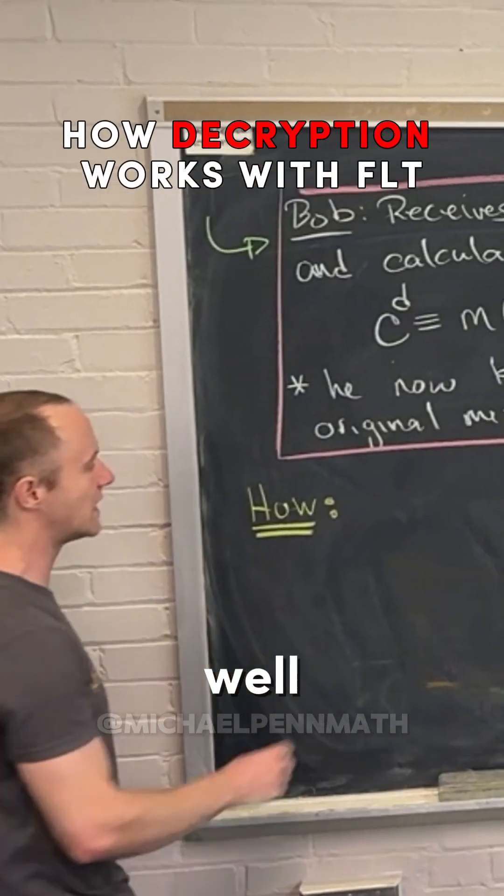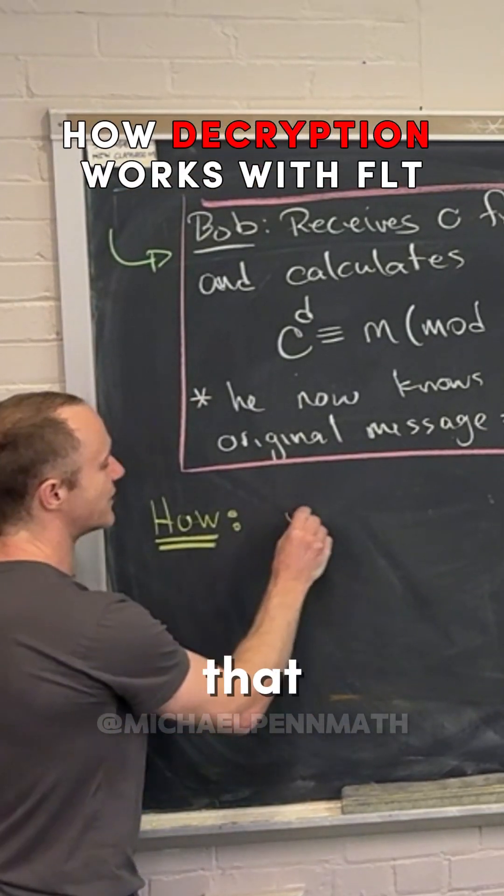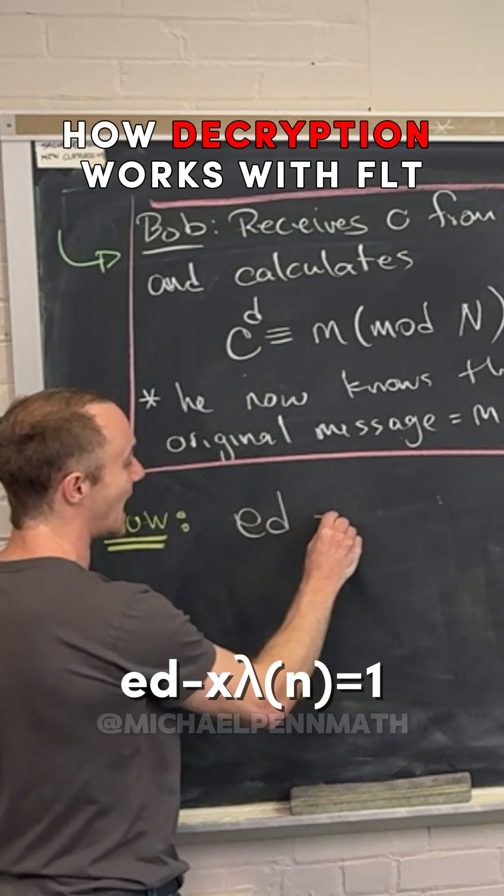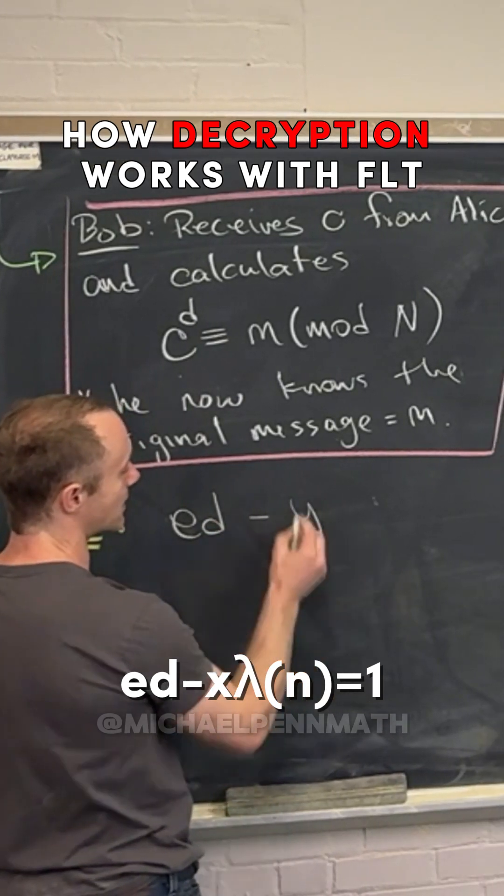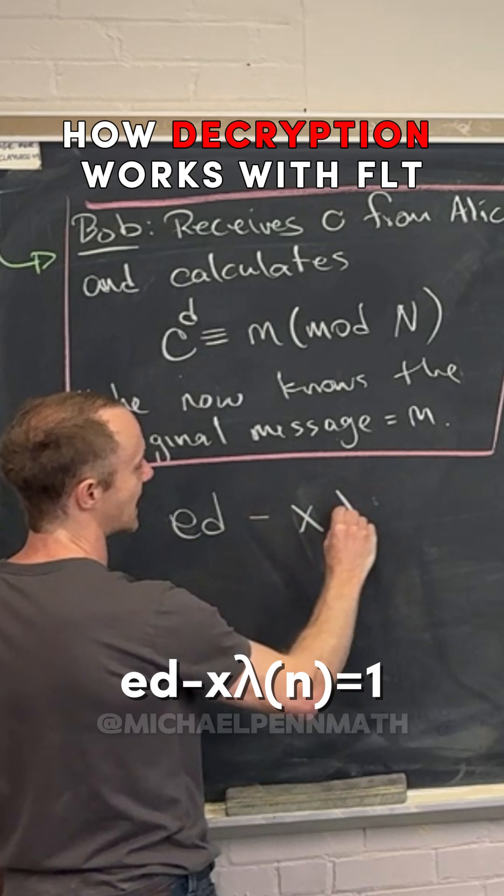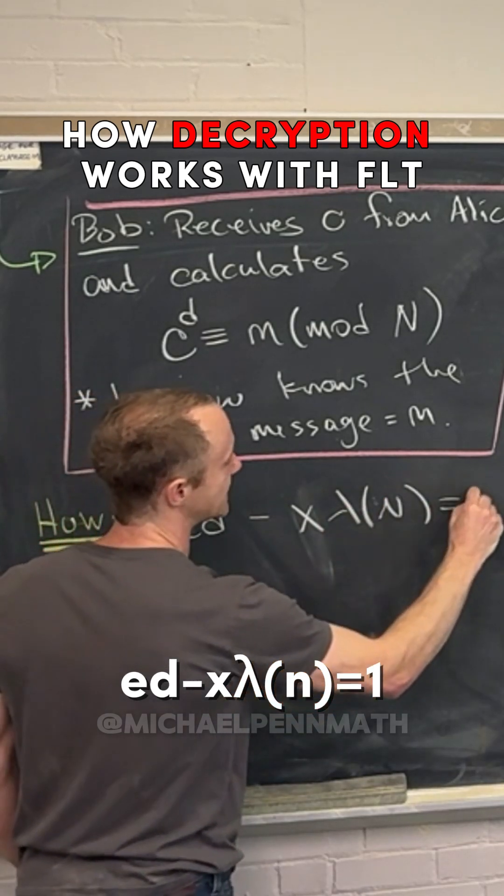So anyway, how does this work? Well, let's recall that we know that e times d minus some number x, x times lambda of n was equal to one, right?